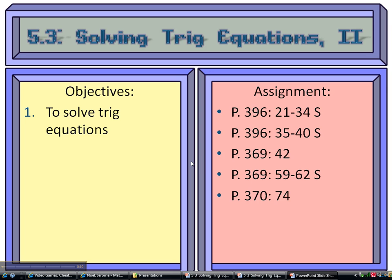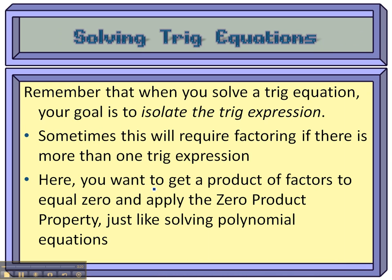Just a recap on what it is that you're trying to do whenever you solve trig equations. When you solve an algebraic equation, you want to get the x by itself. But when it's a trig equation, you want to get the trig expression by itself — the sine, the cosine, whatever. Sometimes that means you're going to have to factor: get everything on one side, factor that side, apply the zero product property, set each factor equal to zero, and solve it just like a polynomial equation.